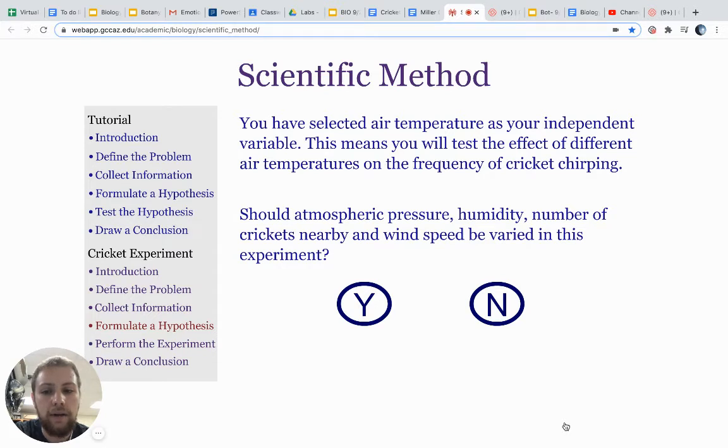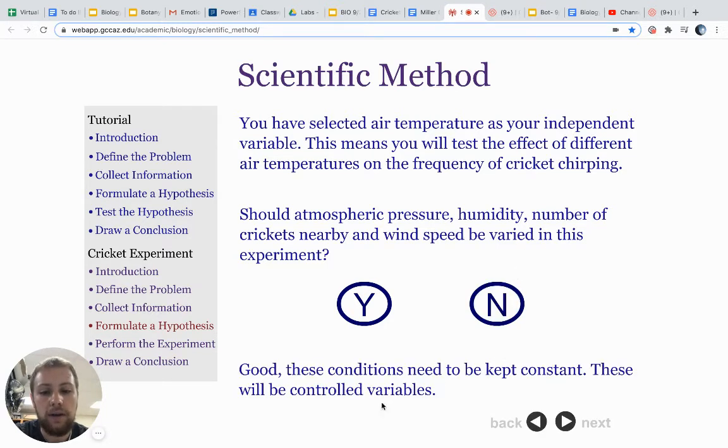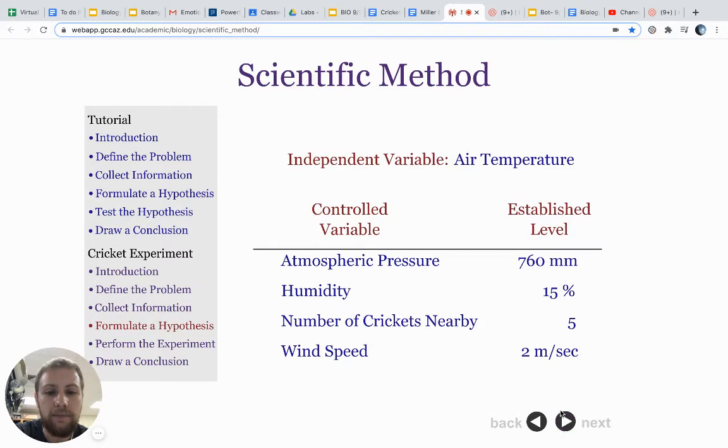Now, should atmospheric pressure, humidity, number of crickets nearby, and wind speed be varied in this experiment? Remember that we only want to change one thing, one independent variable. So for changing temperature, we can't simultaneously change any of these other things. They should all be the same, which we call controlled variables or constants. No, we do not want to vary these. Good. These conditions need to be kept constant. These will be our controlled variables.